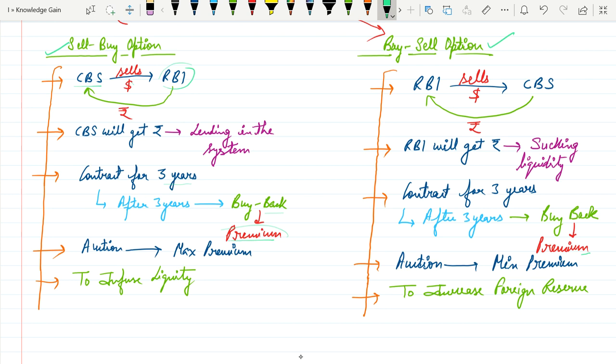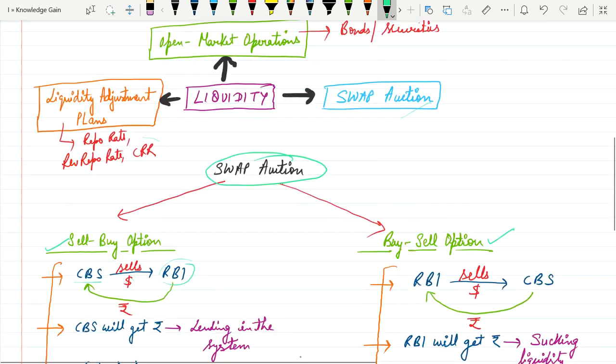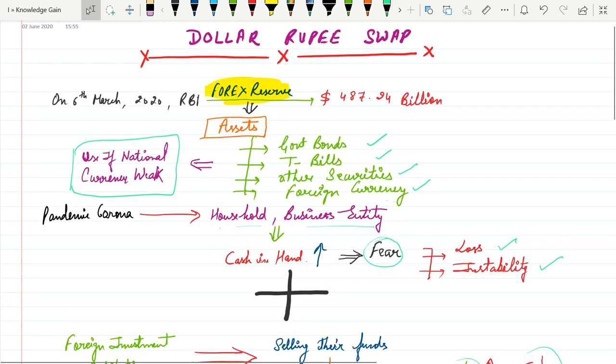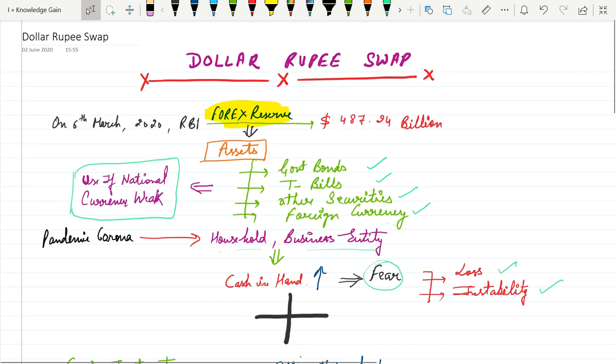Why would government opt this option? To increase foreign reserves. Foreign reserves are basically assets of the government, so they need to reserve these assets. I hope you understand this concept very well. Please like and subscribe to my channel. Thank you.